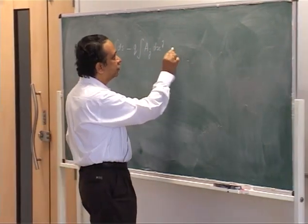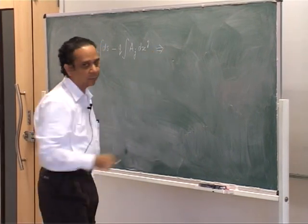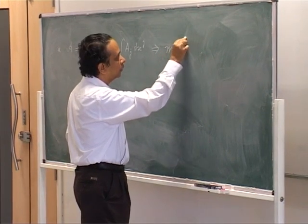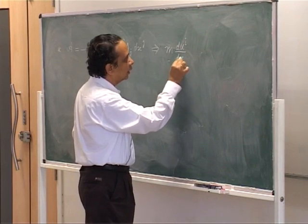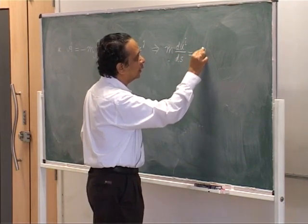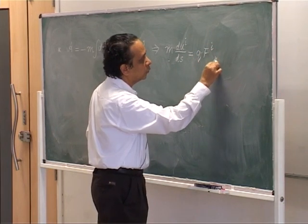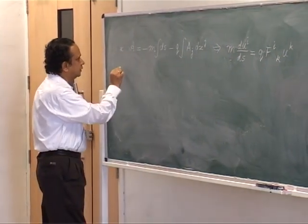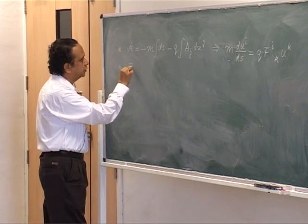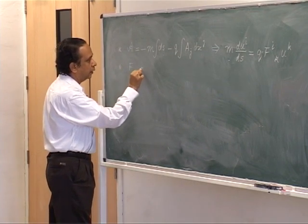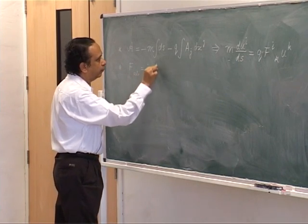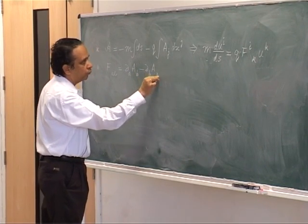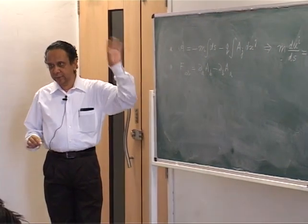I explained to you all the possibilities and then we chose this: a_j dx^j, thereby introducing a four-vector a_j into the problem. We found that this leads to an equation of motion of the form m du^i/ds = q times F^i_k u^k, where we defined f_ab as d_a of A_b minus d_b of A_a.